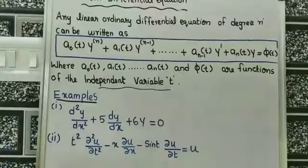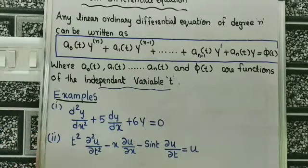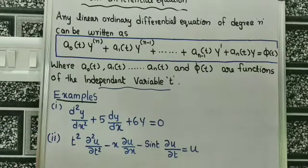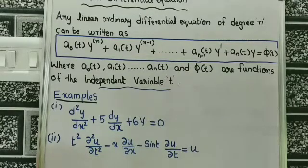For example, the first equation is: d²y/dx² + 5(dy/dx) + 6y = 0. The second example is: t²(∂²u/∂t²) − x(∂u/∂t) − sin(t)(∂u/∂t) = u.